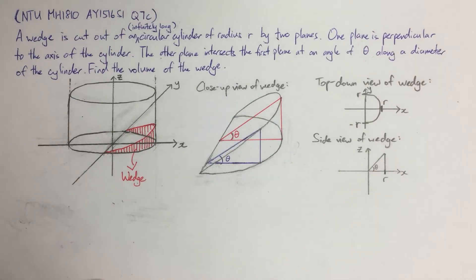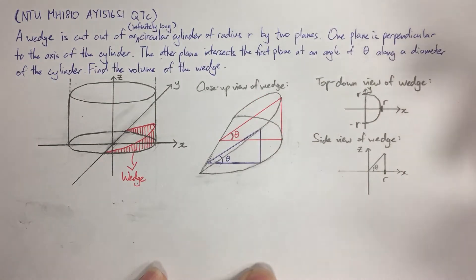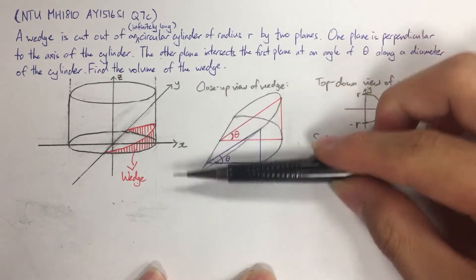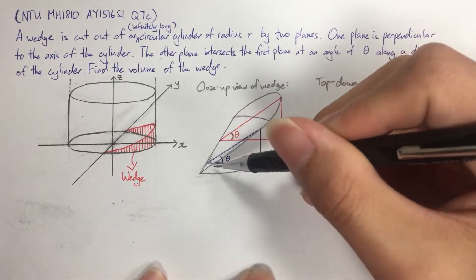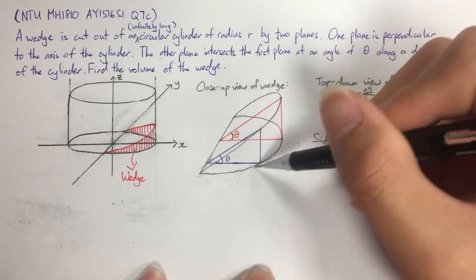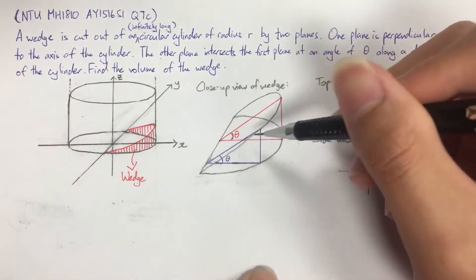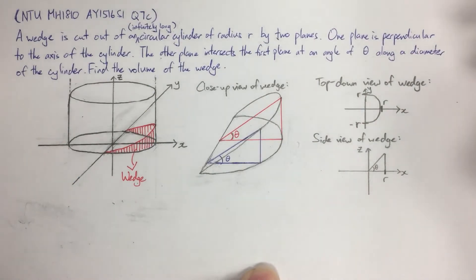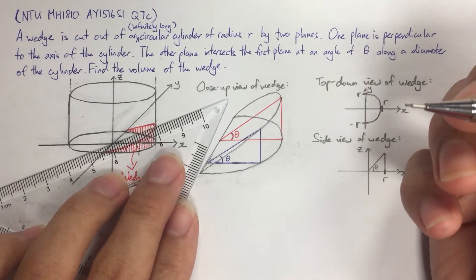How do we solve this question? We're going to use a trick: imagine slicing the wedge in the y-direction. We will get little triangular slices. If you slice at the blue area, you get a blue triangle; if you slice at the red area, you get a red triangle. The triangles will have different areas, but the common thing is they all have the same angle of elevation theta, because the planes that cut out the wedge were at an angle of theta.